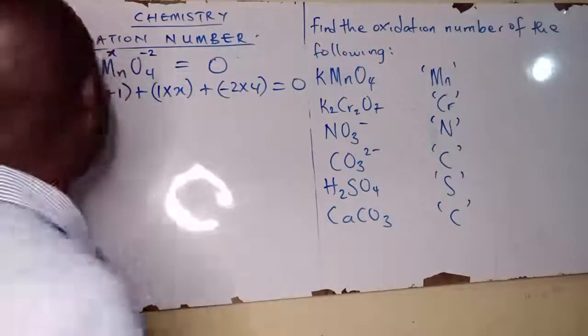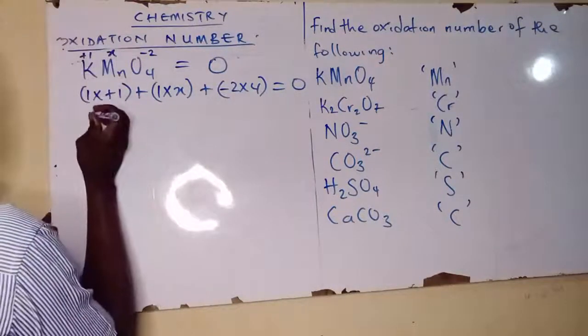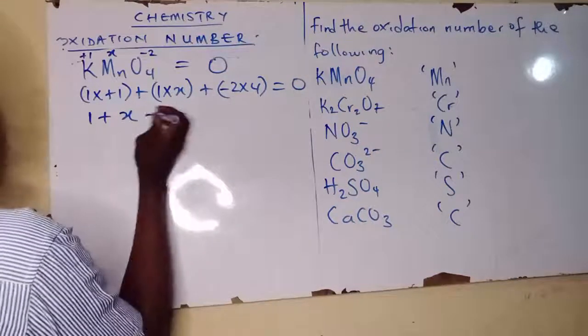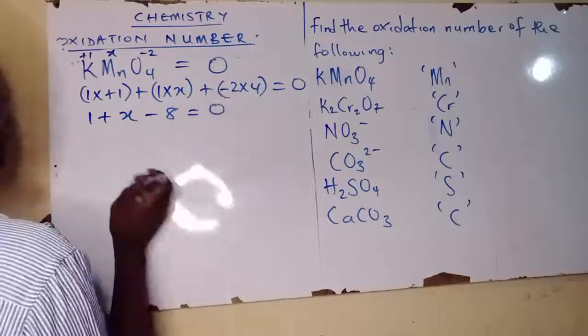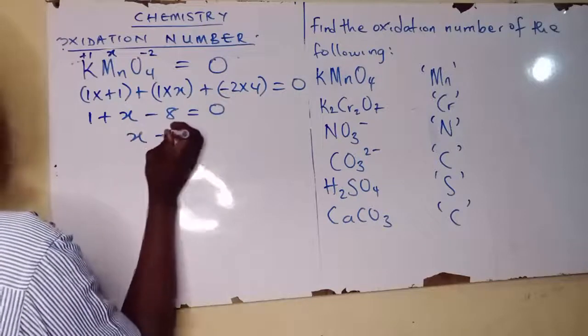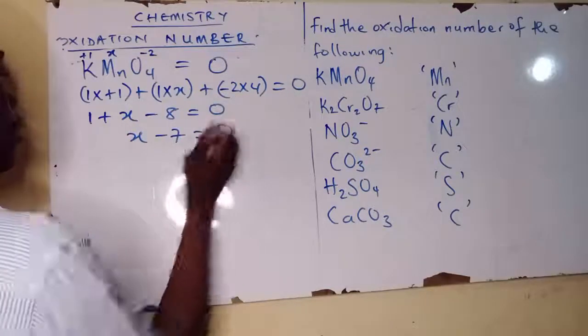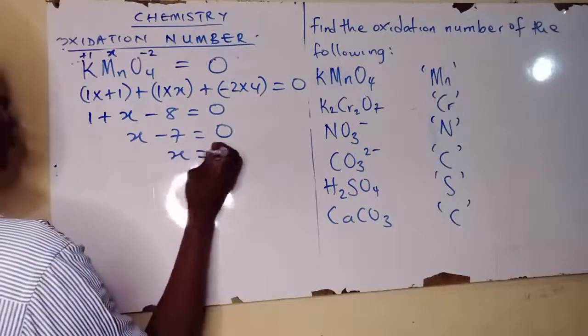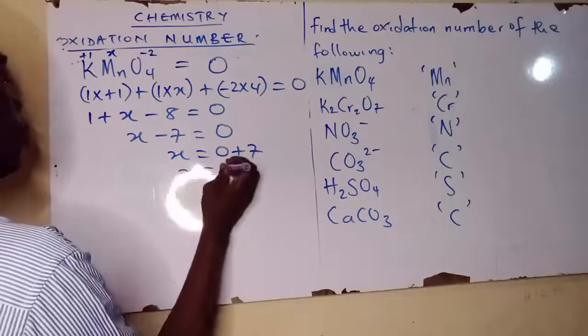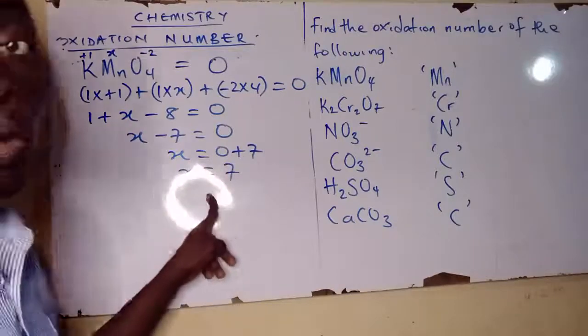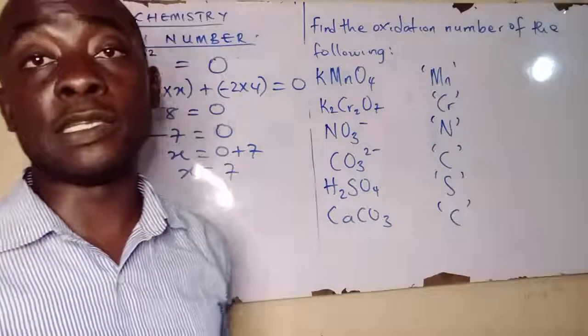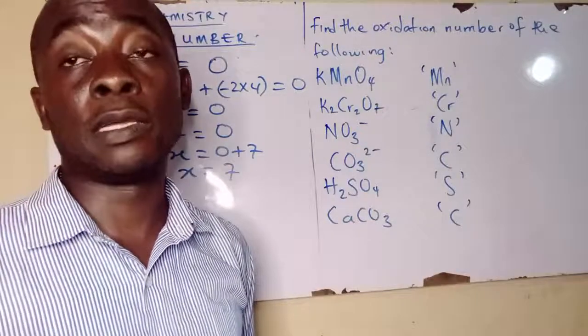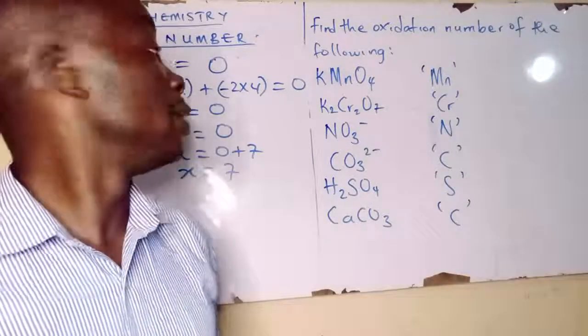So we have 1 plus x minus 8 equals to zero. I can say x minus 7 equals to zero, x equals to zero plus 7, x equals to 7. So the oxidation number of manganese in KMnO4 is 7.